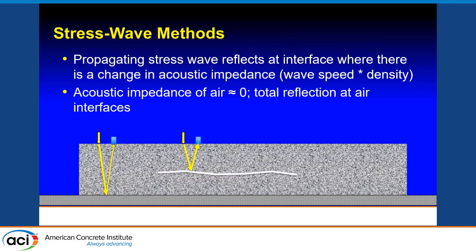Stress waves reflect where there is a change in acoustic impedance, which is the product of wave speed and density, and wave speed is affected by the modulus of elasticity. The acoustic impedance of air is practically zero, so at an air interface you get total reflection of a stress wave — making stress waves a powerful way to look into concrete. In a slab on ground, tapping the top produces a weak reflection at the concrete-subbase interface, but a crack or delamination produces total reflection and is very easy to detect.